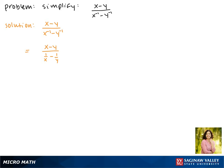So now our goal is to get common denominators in the denominator. We're going to multiply 1 over x by y over y and multiply 1 over y by x over x. This will give us a common denominator of xy.